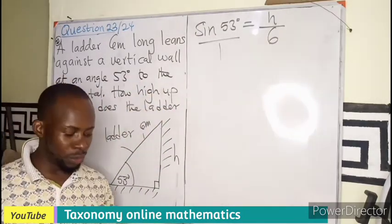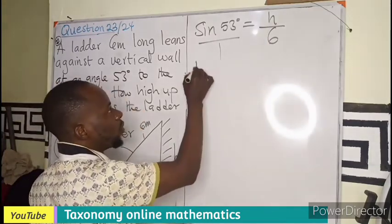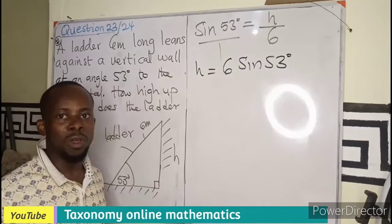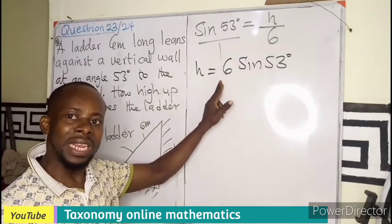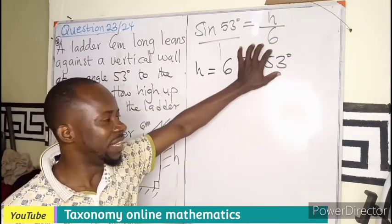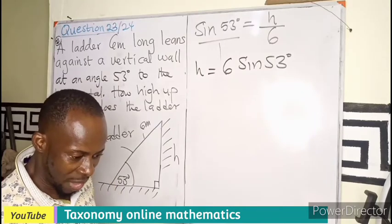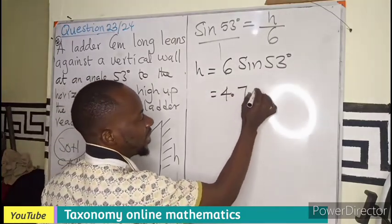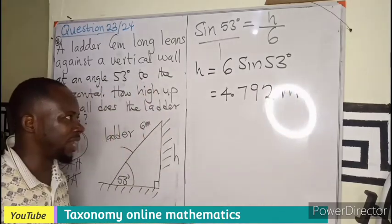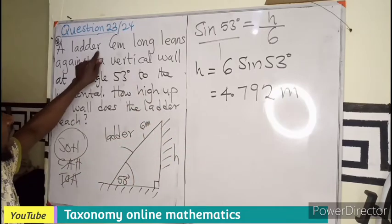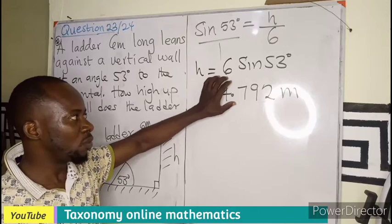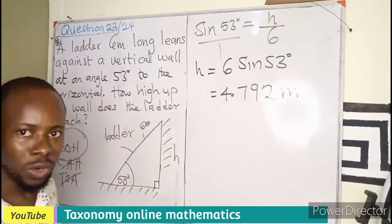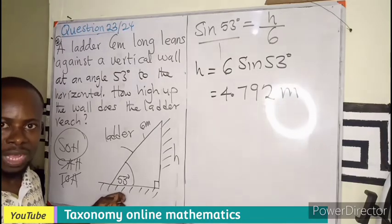We do cross multiplication, meaning h will become the subject. Then 6 will multiply sine 53. Don't forget, you cannot say sine 53 times 6 as that would be increasing the size of the angle. This is one term multiplying the 6. With our calculator, you have this to be 4.792 if we are rounding down to 3 decimal places. So the ladder reaches, to a whole number, 5 meters, but to 3 decimal places, 4.792 meters using the trigonometry function.